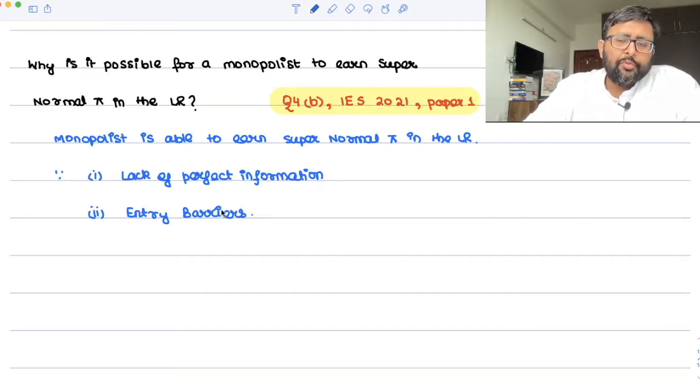So what do you mean by the lack of perfect information? There could be the case that, for example, don't always think in terms of railways only when you think of monopoly. That's a natural monopoly. But there can be a monopoly of a bakery even in a localized area. And there might be some other bakery also in that local area, but people do not have perfect information. People don't know that the quality of the other baker is even better than this monopolist baker. So there is lack of perfect information. So the way he is able to portray himself is that his product is the best and the buyers do not have the perfect information. So that is also one of the reasons why monopolist is able to earn the supernormal profits.